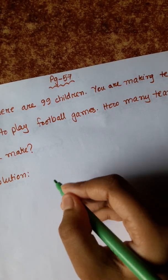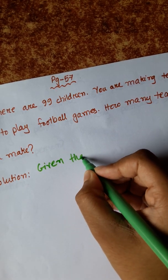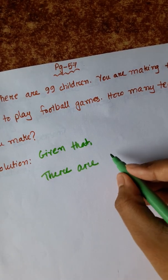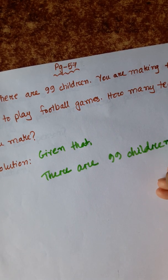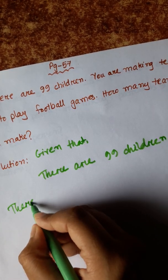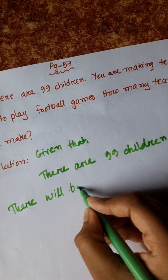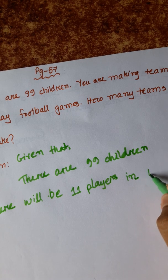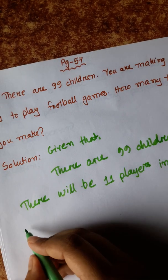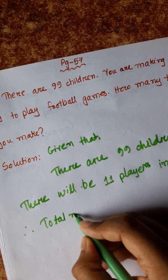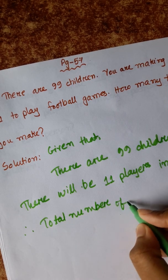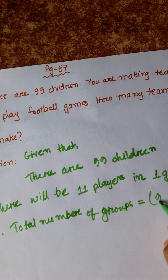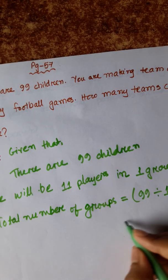Given: there are 99 children and there will be 11 players in one team. Therefore, the total number of groups is equal to 99 divided by 11, which is 9.